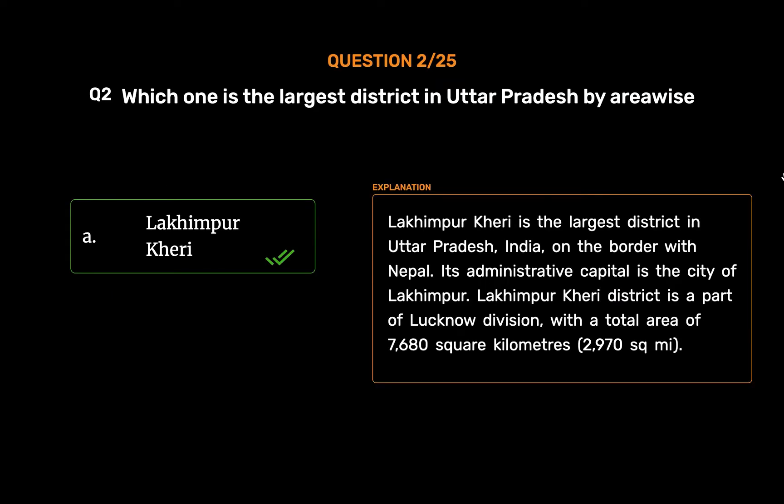Lakhimpur Kheri is the largest district in Uttar Pradesh, India, on the border with Nepal. Its administrative capital is the city of Lakhimpur. Lakhimpur Kheri district is a part of Lucknow division, with a total area of 7,680 square kilometers (2,970 square miles).